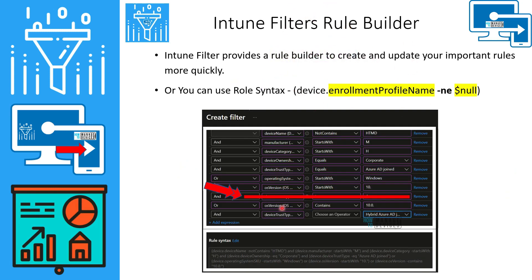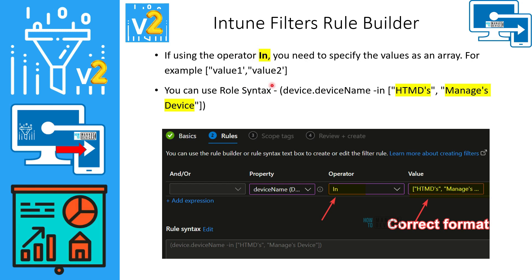Another slide from the last video had incorrect technical information regarding expressions. If you are using the operator 'in', there should be an array of values. This is the correct syntax for an Intune filter rule with the 'in' operator — you need to specify values as an array, for example: value one, value two, etc.